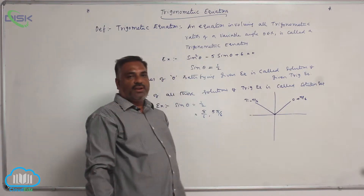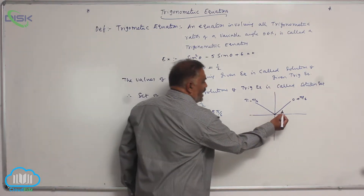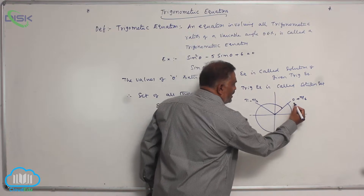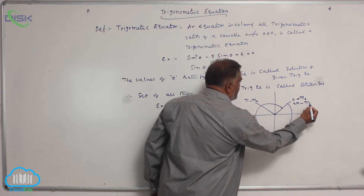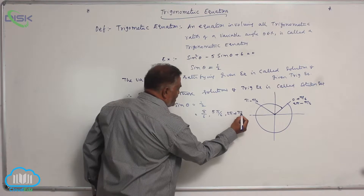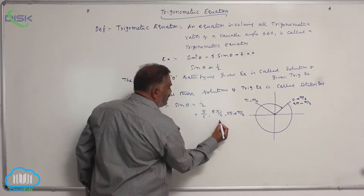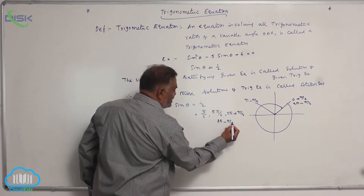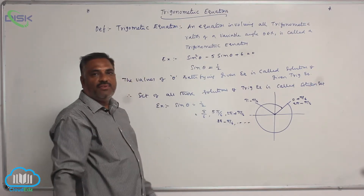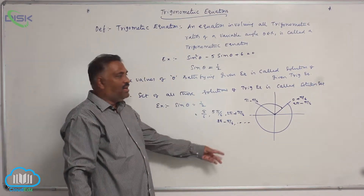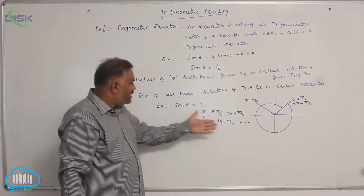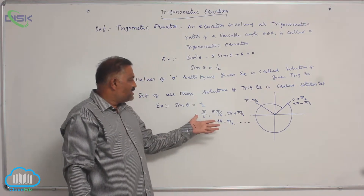With one full rotation, we get 2 pi plus pi by 6 as another value, and 3 pi minus pi by 6 as yet another. Continuing clockwise or anticlockwise, you can collect as many values as needed. The set of all these values is the solution set of the given equation.